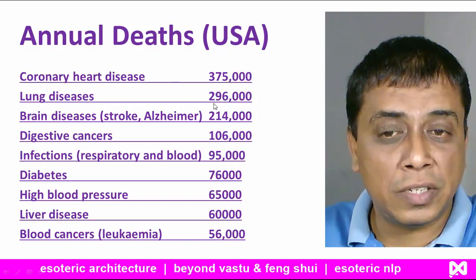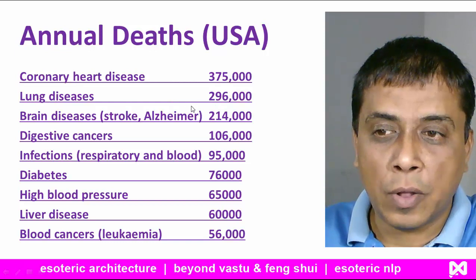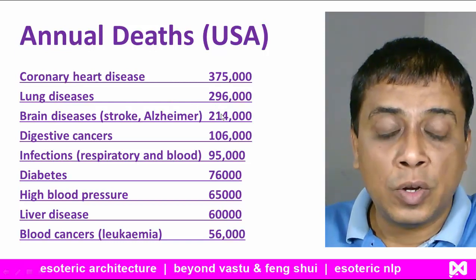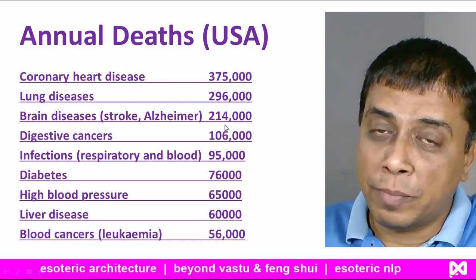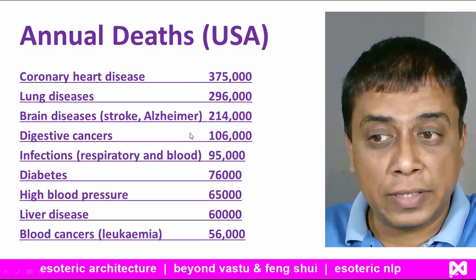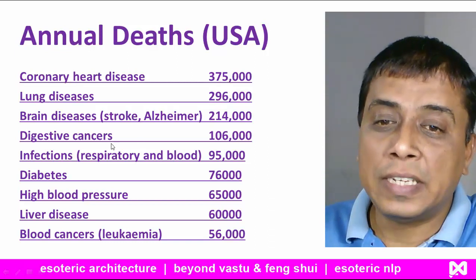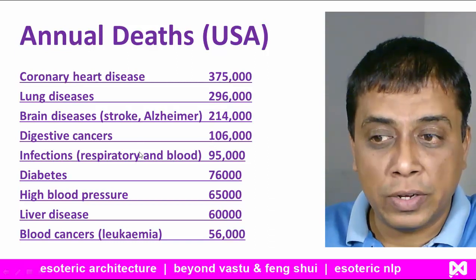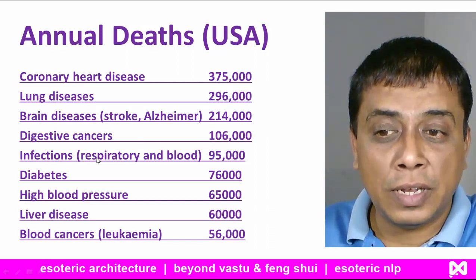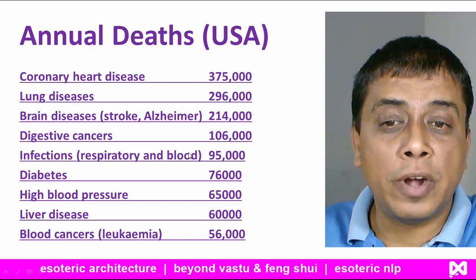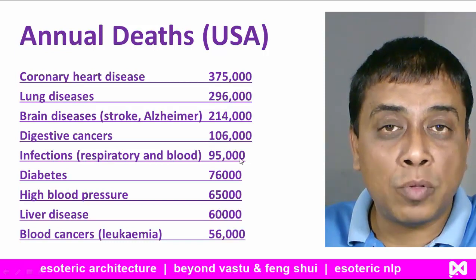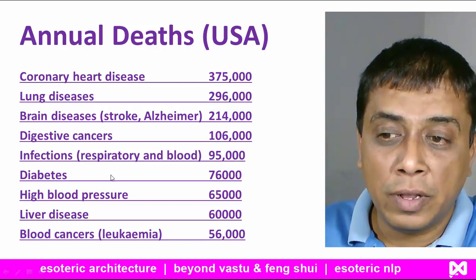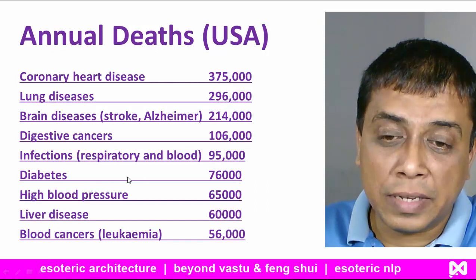Lung diseases account for almost 300,000 deaths a year. Brain diseases, 214,000 deaths every year. Digestive cancers, 100,000 deaths a year. Respiratory and blood infections — almost 95,000, nearly 100,000 people a year.